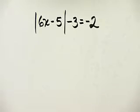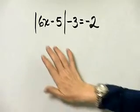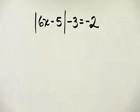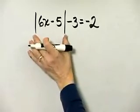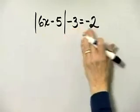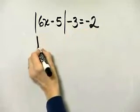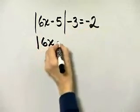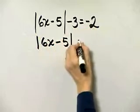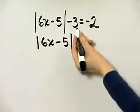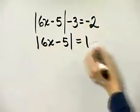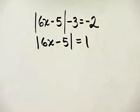We want to solve this equation — notice this is an absolute value equation. Don't forget to first isolate the absolute value. To do so, I will add 3 to both sides of the equation, so I'll have the absolute value of 6x minus 5 is equal to negative 2 plus 3, which is positive 1. So I did isolate the absolute value.